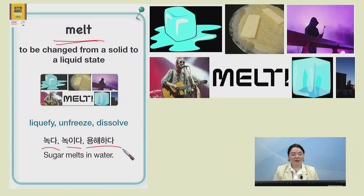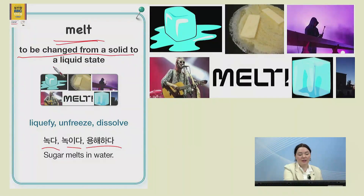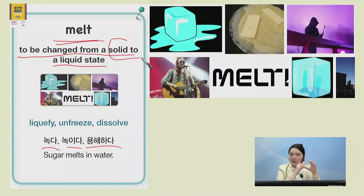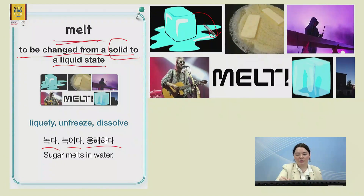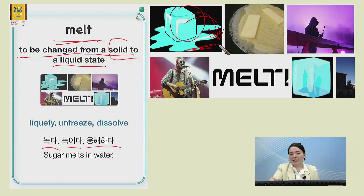So melt means to be changed from a solid to liquid state. Solid — 딱딱한 — solid like an ice cube to liquid, water, state. So 그건 바꾸는 거예요. So this ice cube is melting into water. Or this butter is melting into oil.